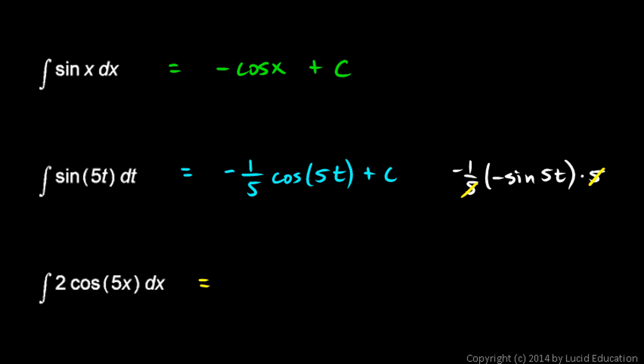The integral of 2cos(5x) dx—the integral of the cosine function is the sine function, so let's try sin(5x). If we differentiate this, we get cos(5x) times 5 by the chain rule. So we don't need a factor of 5, we need a factor of 2. We need to divide by 5 and multiply by 2, and we can check this. The derivative of this will be 2/5 times cos(5x) times 5. That's right—those fives cancel, and we get exactly that.